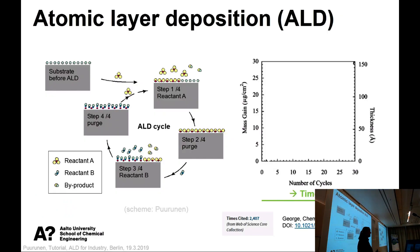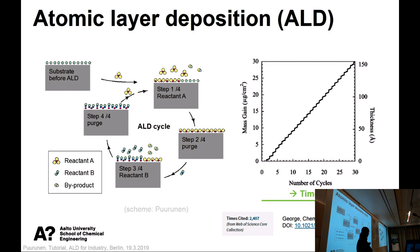Just to make sure that everybody is on the same page, I have this introduction of ALD. We are talking about a cyclic process based on typically at least two gaseous reactants brought to a surface to react after each other to build a film. If you look at how the mass on the surface increases with time, it's stepwise — not continuous. We're talking about a process that stops by itself. This figure is from a review by Steven George, which has gathered an enormous 2,400 citations — already testifying to the impact of ALD in the world.